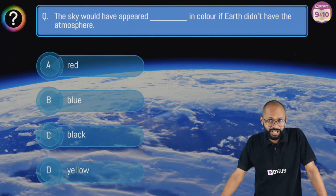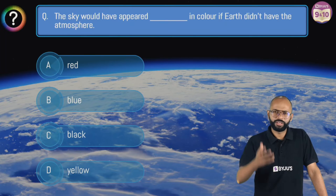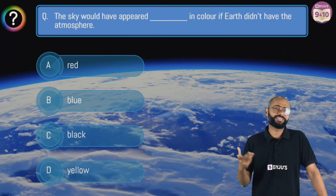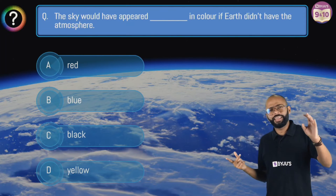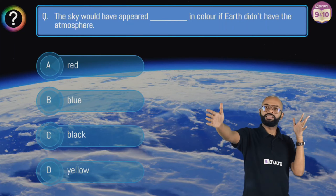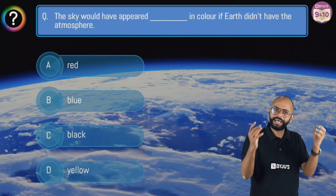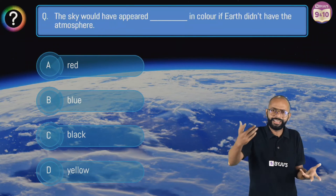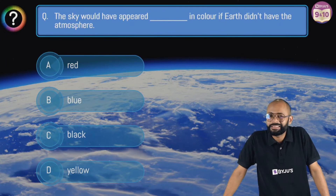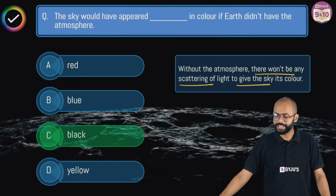What color would the sky appear if Earth didn't have an atmosphere? Pause and think. Also — why is space dark? The sun is there, light is coming, yet space looks dark because there are no molecules in space to scatter the light. The light passes right through without scattering. So without atmosphere, the sky would appear black — same reason space is black.